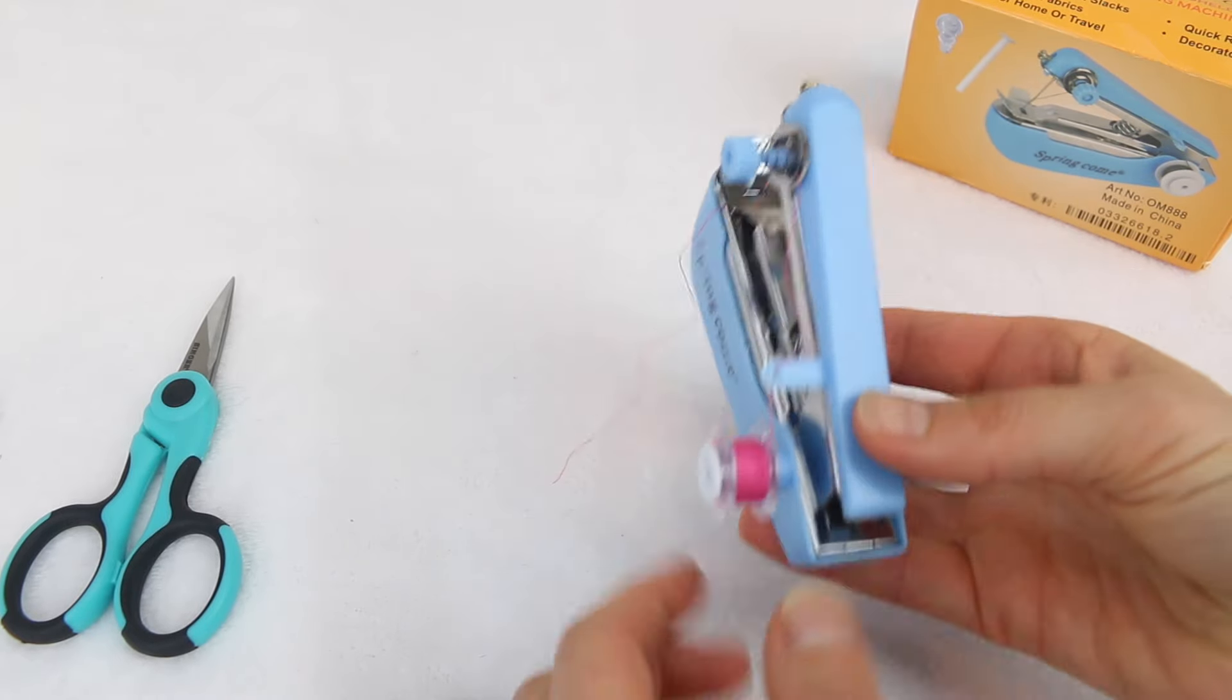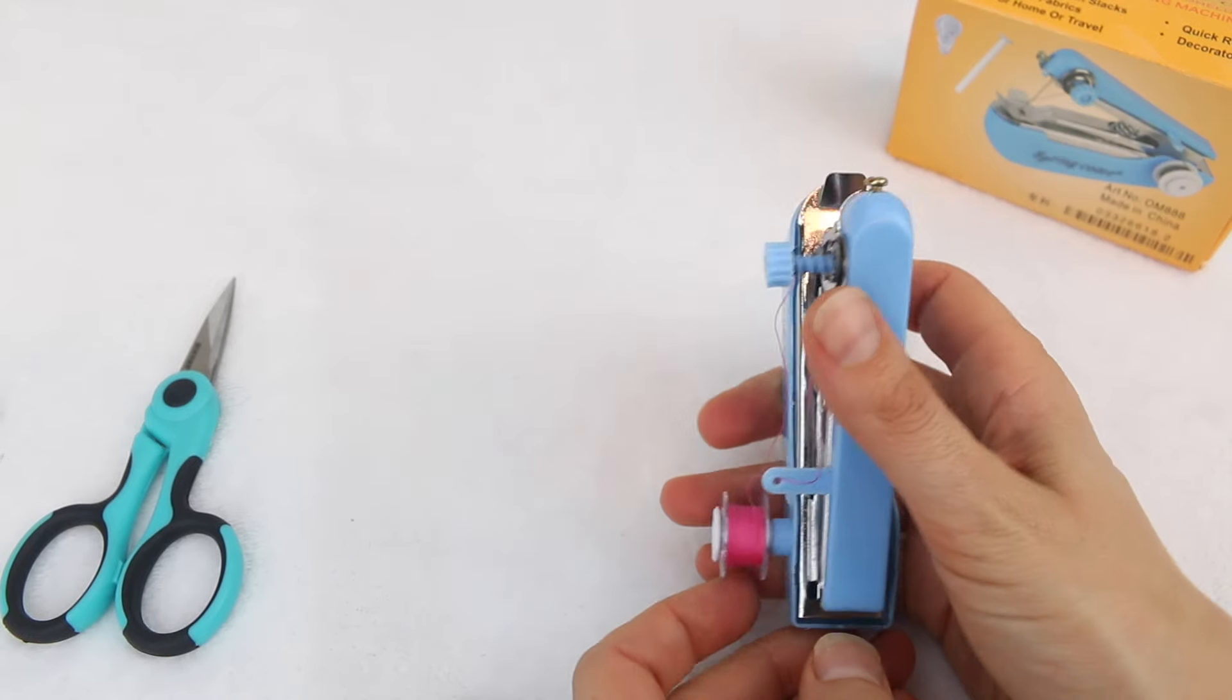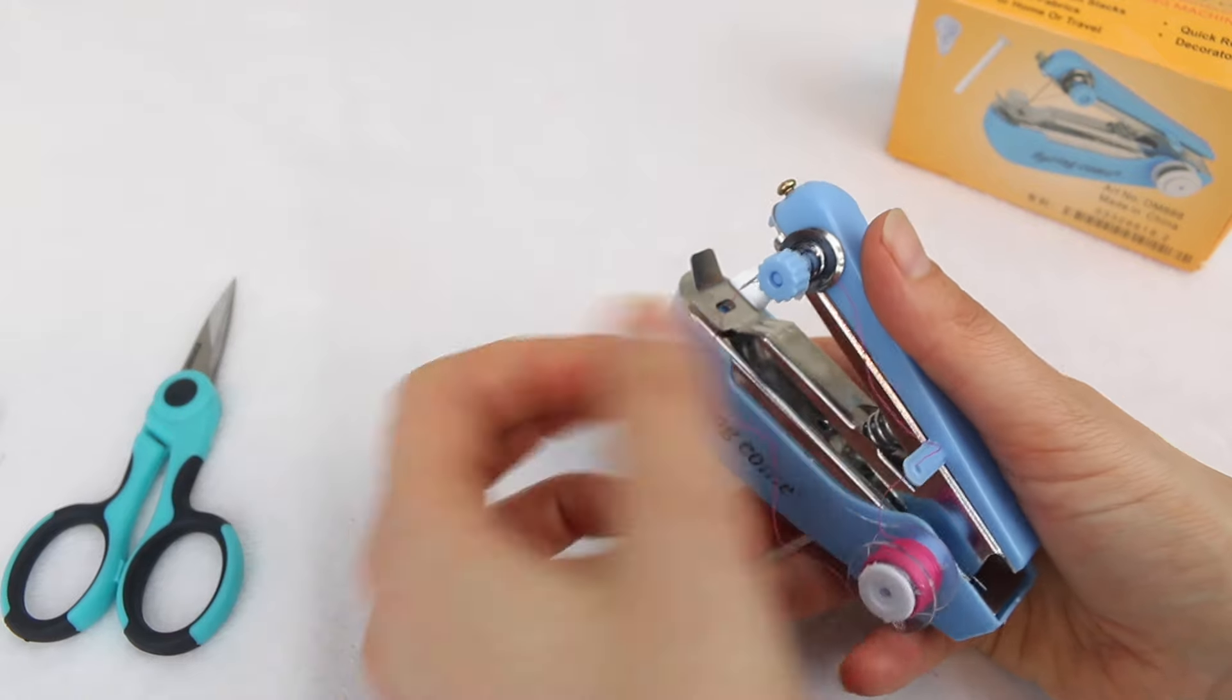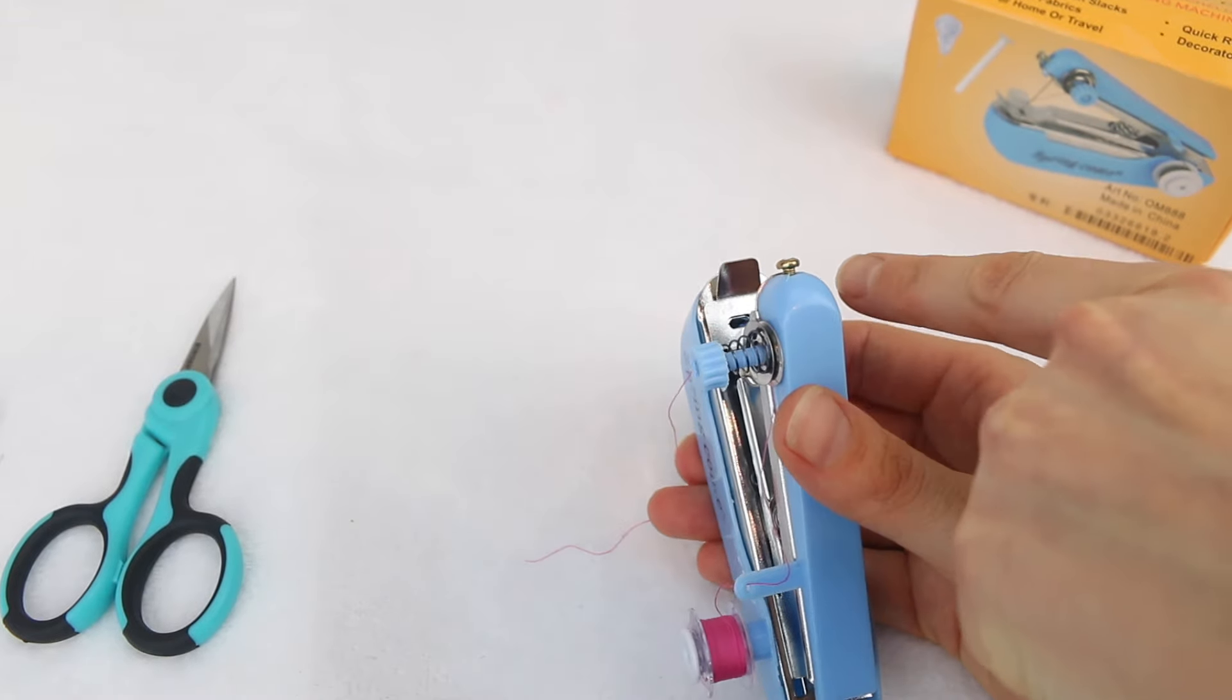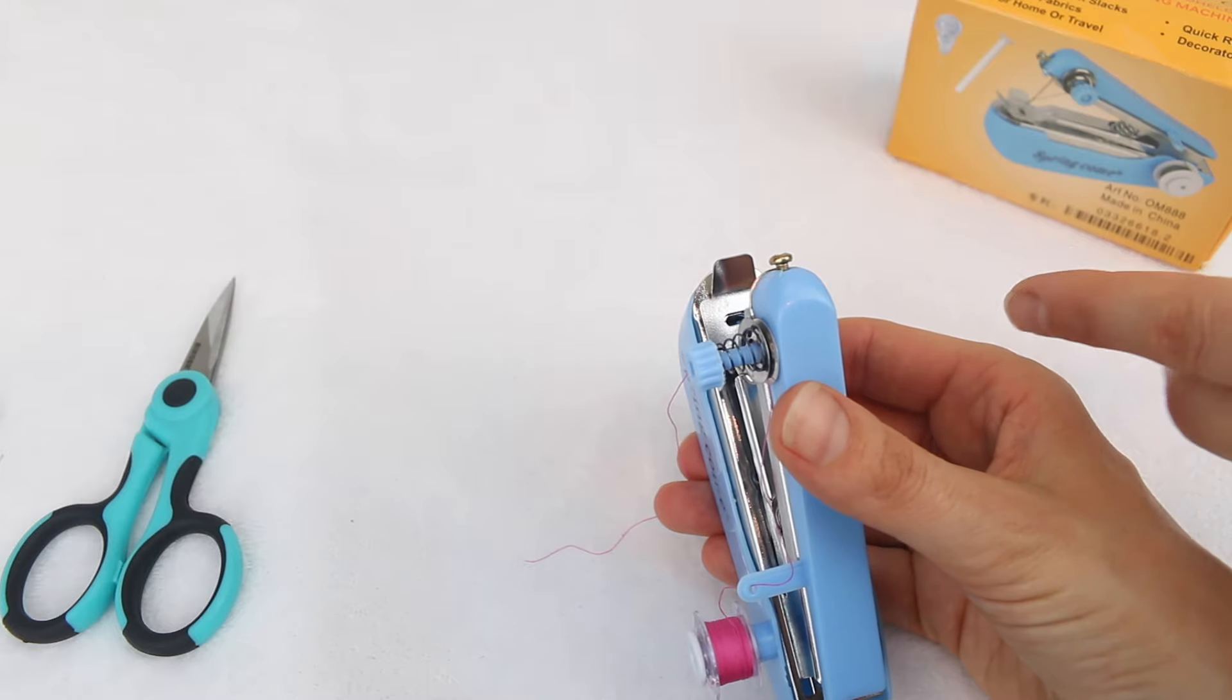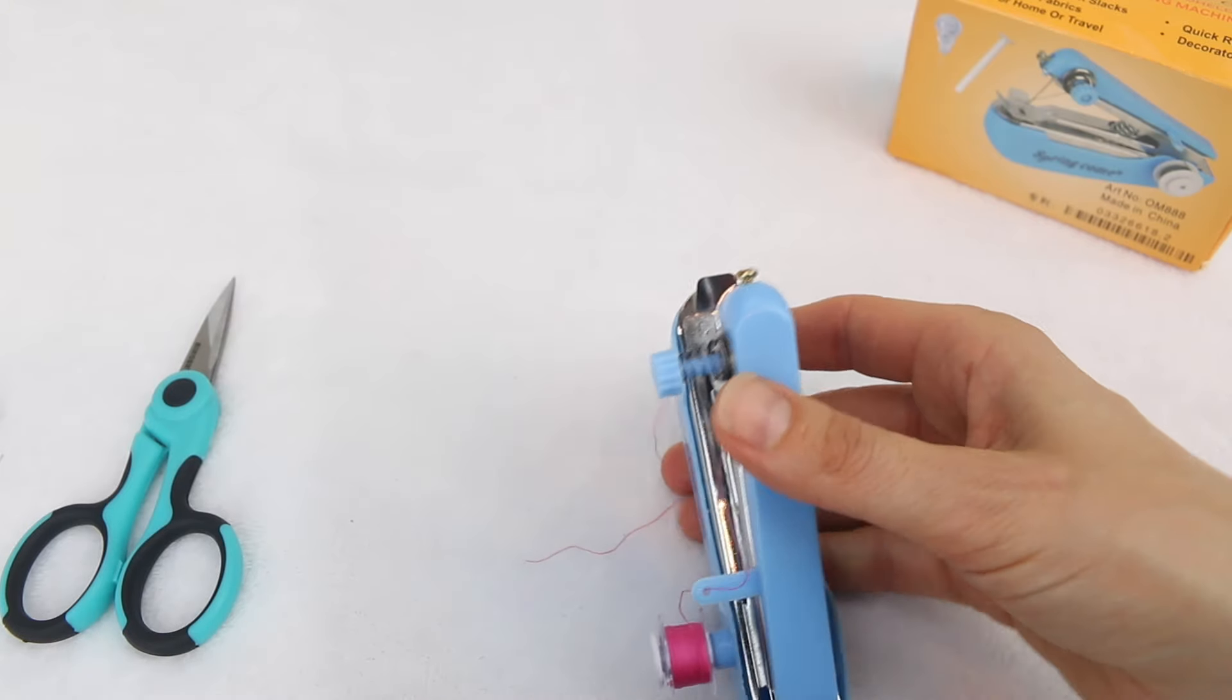So to start sewing with your little machine, I tend to hold it in my right hand. I have the thread tail coming off to the left here and the fabric will need to come in from the right because the fabric will move from the right through to the left.